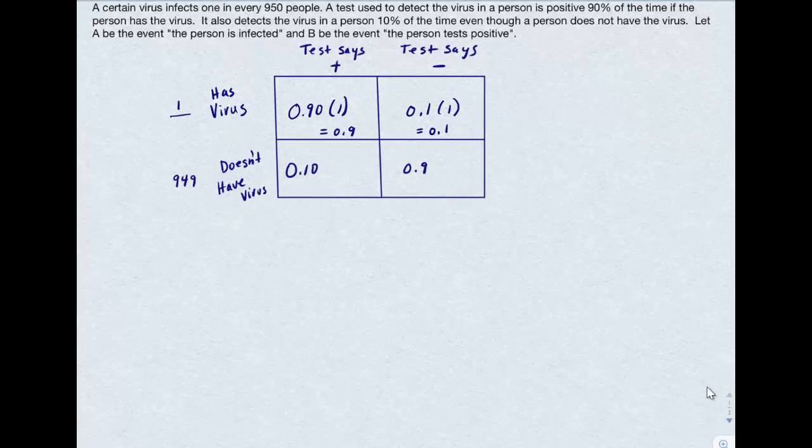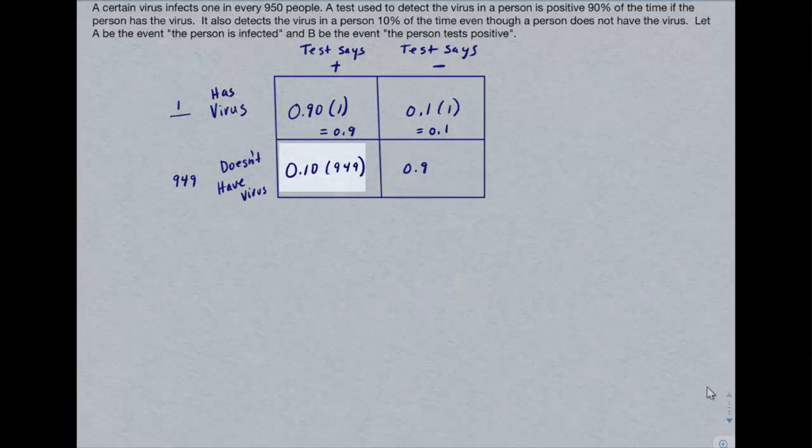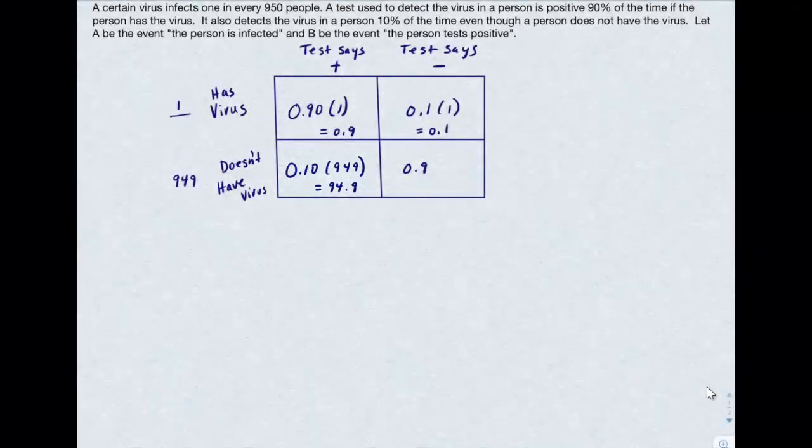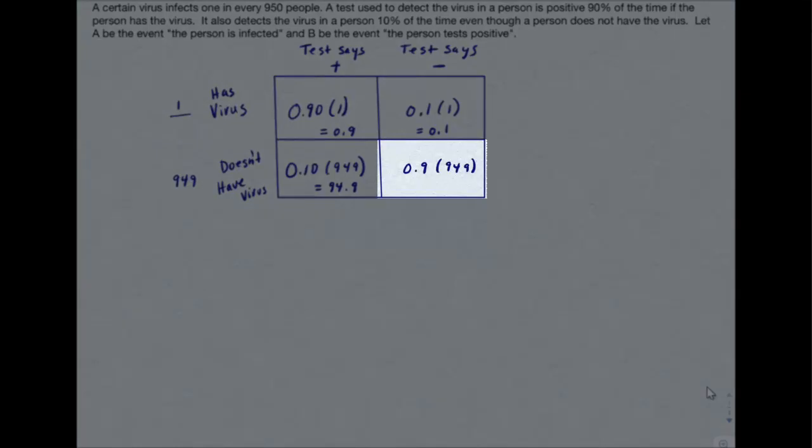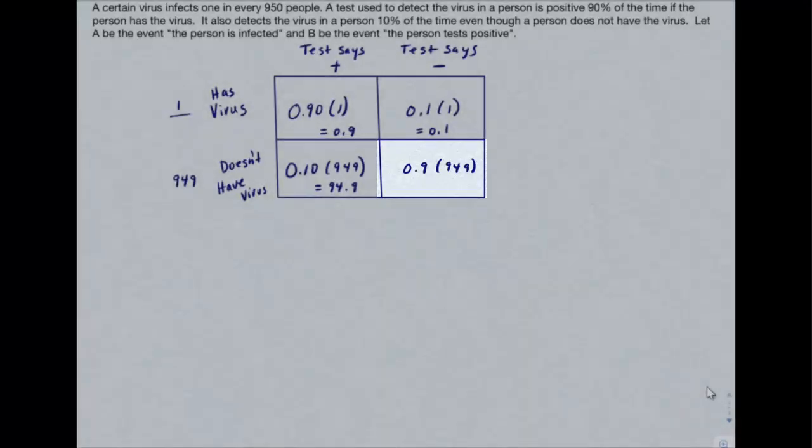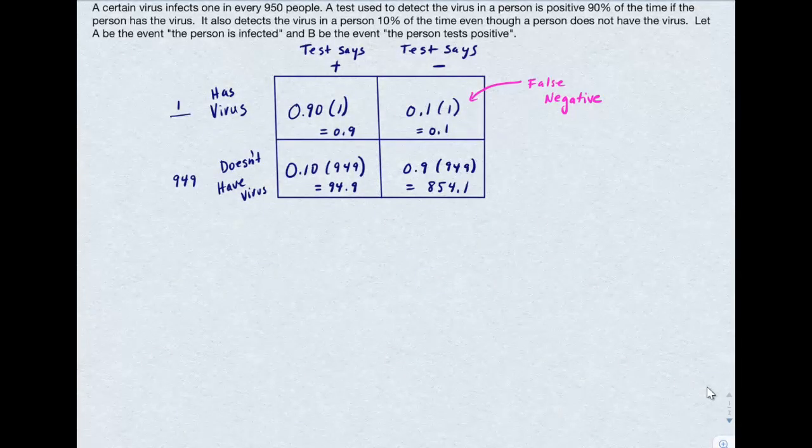Now let's do the same thing for the second row. If I have 949 people, and 10% of them are going to show that they do have the disease when they actually do not, 949 times 0.1 is simply 94.9 people. And likewise, 90% of them will show that they don't in fact have the disease.